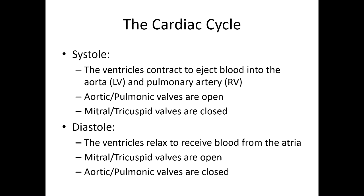During diastole, the exact opposite is true. The ventricles are relaxing and accepting blood from the atria. So the mitral and tricuspid valves should be open to allow blood to flow across them into the ventricles, and then the pulmonic and aortic valves should be completely closed during that time.